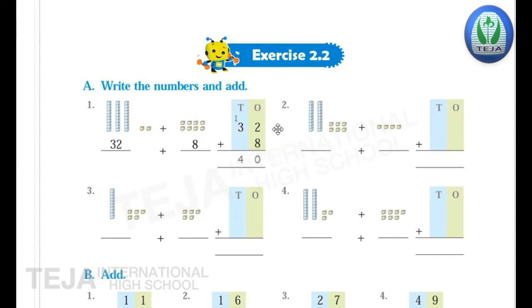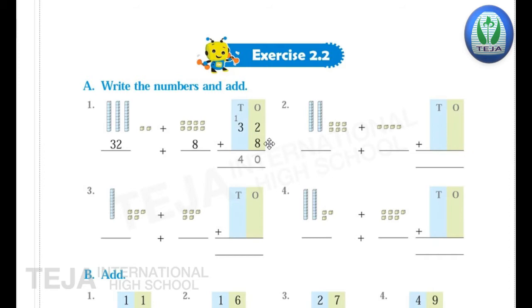First number is 32, second number is 8. Now add 32 plus 8. Here 2 plus 8 is 10, so carry 1 and write 0 in the 1's place. Now 3 plus 1 is 4, so write 4 in the 10's place. And the answer is 40. 32 plus 8 is 40.